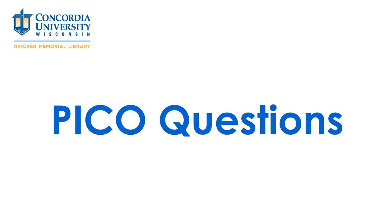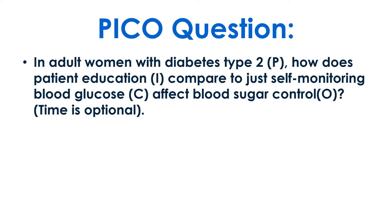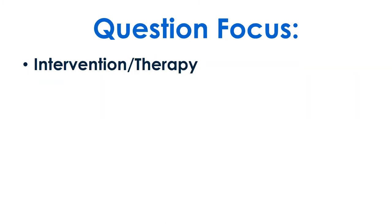This tutorial will cover the basics of doing library research for PICO questions. Our PICO question is: in adult women with type 2 diabetes, how does patient education compared to just self-monitoring blood sugar levels affect blood sugar control? Our question focus is intervention or therapy.